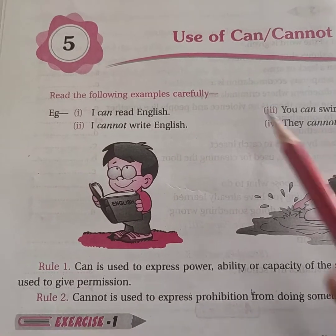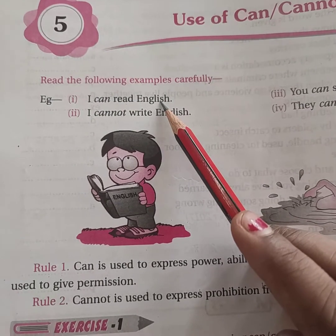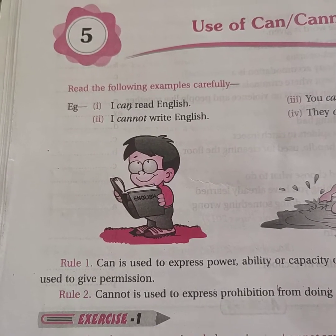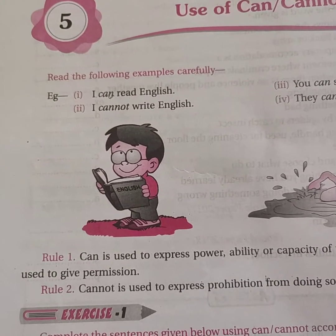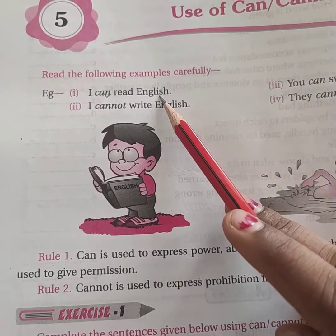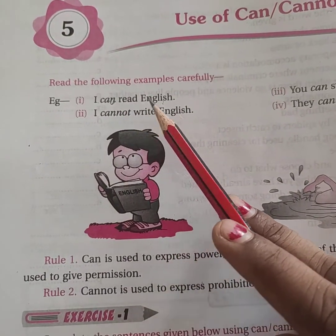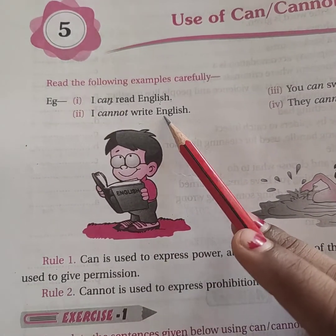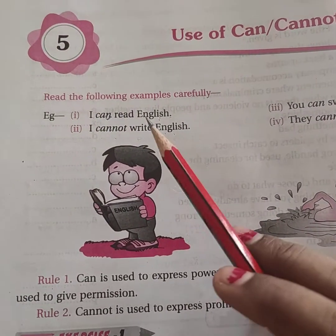So how do we use can and cannot? We will read the chapter from the book. You can read it in English. The Hindi meaning of 'can' is किसी काम को करने की क्षमता, यानि ability. Can में सकना होता है. For example: I can read English — मैं English पढ़ सकता हूँ. I cannot write English — मैं English लिख नहीं सकता. I hope you get something.